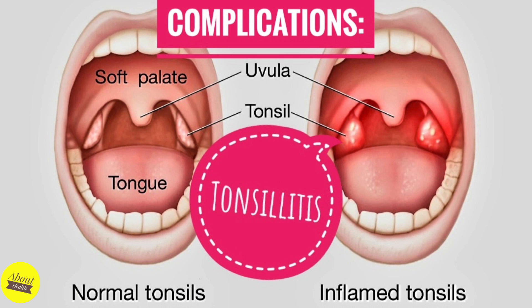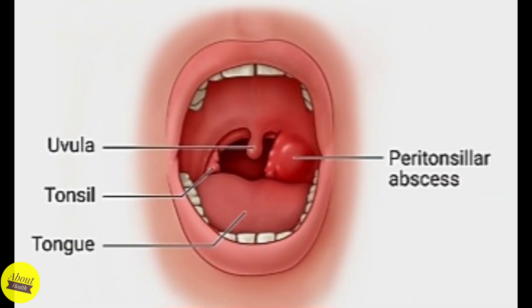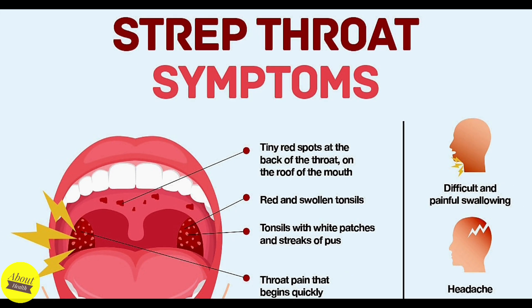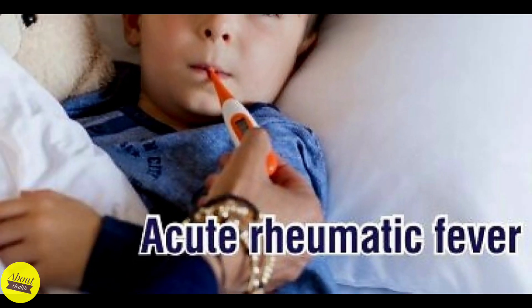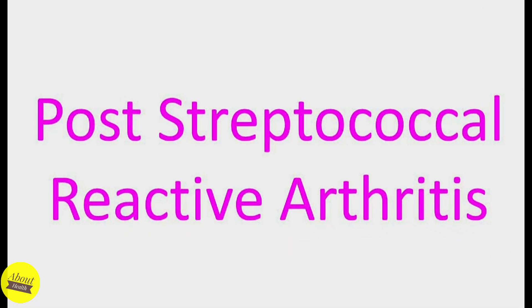Inflammation or swelling of the tonsils from frequent or ongoing tonsillitis can cause complications such as disrupted breathing during sleep or obstructive sleep apnea, infection that spreads deep into surrounding tissue or tonsillar cellulitis, and collection of pus behind a tonsil or peritonsillar abscess. If tonsillitis caused by group A Streptococcus isn't treated or if antibiotic treatment is incomplete, your child has an increased risk of rare disorders such as rheumatic fever — a serious inflammatory condition that can affect the heart, joints, nervous system, and skin — as well as complications of scarlet fever, a streptococcal infection characterized by a prominent rash, and post-streptococcal reactive arthritis, a condition that causes inflammation of the joints.